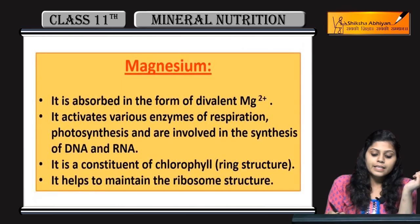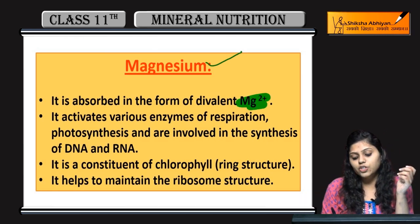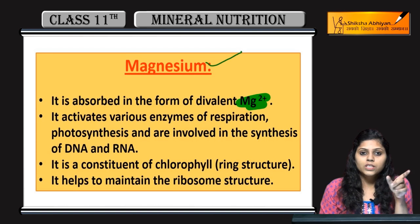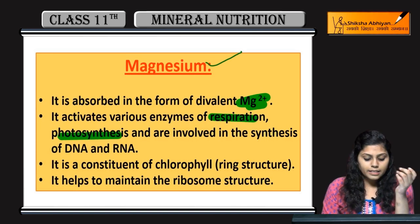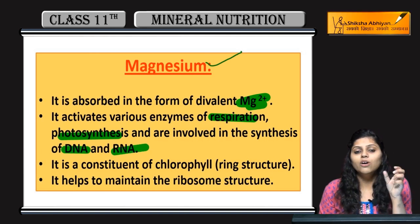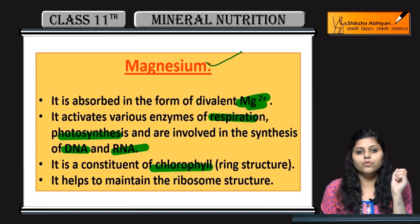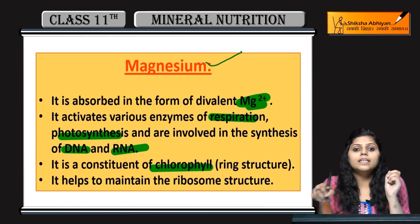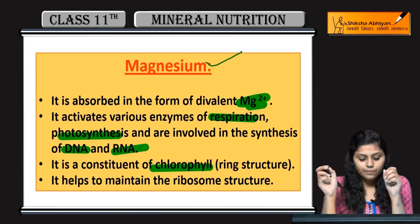Now, magnesium. Magnesium is absorbed in the form of divalent magnesium ions, the Mg²⁺ form. It plays an important role in respiration, photosynthesis, and DNA and RNA synthesis. Magnesium is a constituent of chlorophyll, where magnesium ions sit at the center of the ring structure.